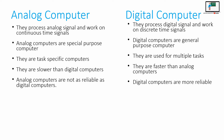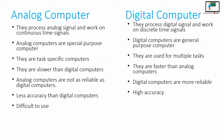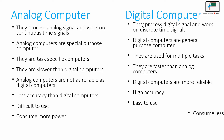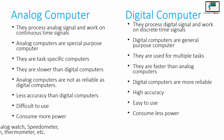Analog computers are less accurate than digital computers, whereas digital computers are more accurate and have a high rate of accuracy. Analog computers are difficult to use and consume more power, whereas digital computers are easy to use and consume less power.